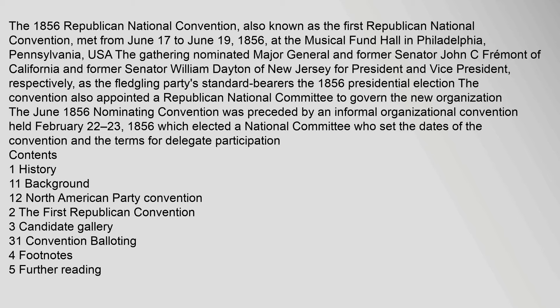The 1856 Republican National Convention, also known as the First Republican National Convention, met from June 17 to June 19, 1856, at the Musical Fund Hall in Philadelphia, Pennsylvania, USA. The gathering nominated Major General and former Senator John C. Fremont of California and former Senator William Dayton of New Jersey for President and Vice President, respectively, as the fledgling party's standard bearers in the 1856 presidential election. The convention also appointed a Republican National Committee to govern the new organization.